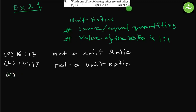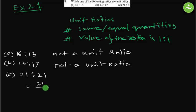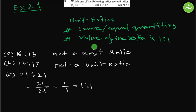Next, part c: 21 is to 21. The quantities are the same. Let us find the value of the ratio: 21 by 21 equals to 1 by 1, equals to 1 is to 1. The equal quantities are 21 and 21. The value of the ratio is 1 is to 1. So this is a unit ratio.